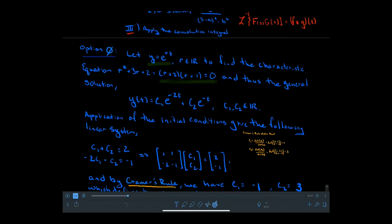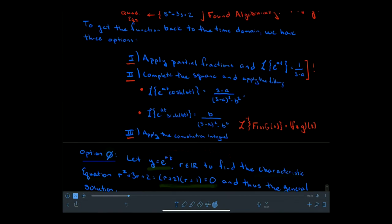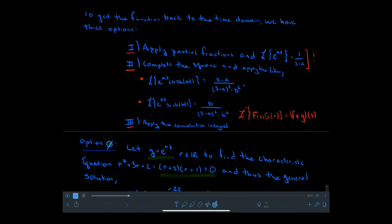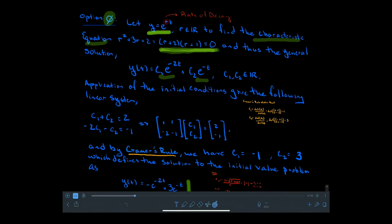So we have these three options: partial fractions, complete the square, or the convolution integral. They're all different techniques but lead to the same result, because the underlying structure of these problems is bound to the exponential function and the algebra it obeys under differentiation. We'll call the classical approach option 0 — that starts with assuming y equals e to the rt, deriving the characteristic equation, whose roots define the rates of decay associated with the exponential functions.